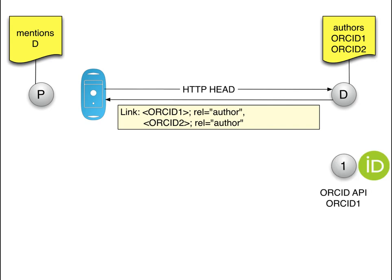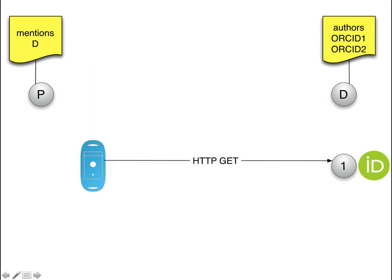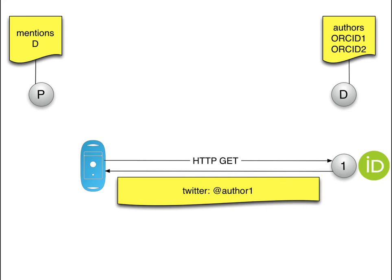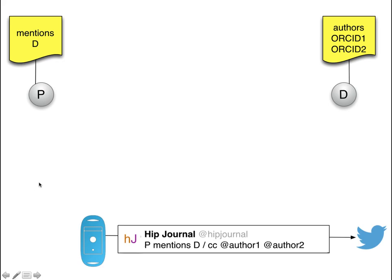With that information, the bot can talk to the ORCID API, using each ORCID HTTP URI to obtain information about those authors. An XML document comes back from the ORCID API, and in there the bot can find the Twitter handle of each author. Now the bot is in possession of the Twitter handles of both authors, and it can publish a tweet that says 'P mentions D' — the paper mentions the dataset — copying author 1 and author 2 by means of their Twitter handles. In real time, they are made aware that there is a new paper that used their dataset. The only things used here were HTTP HEAD, a link header, and a published API.